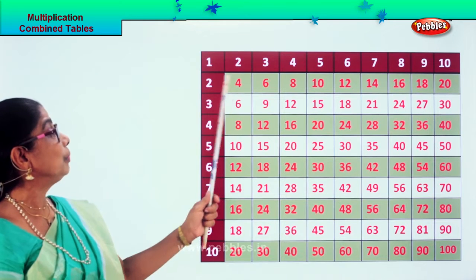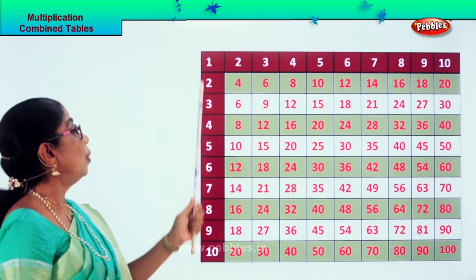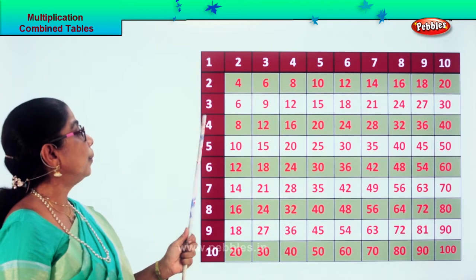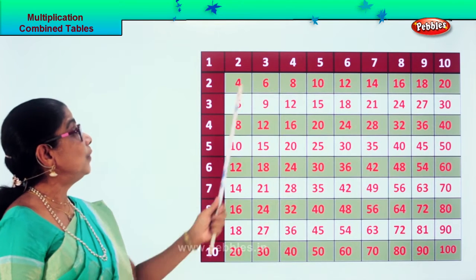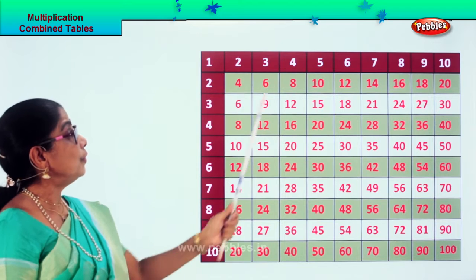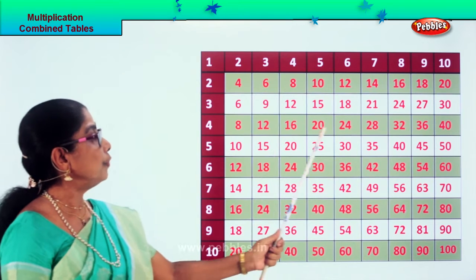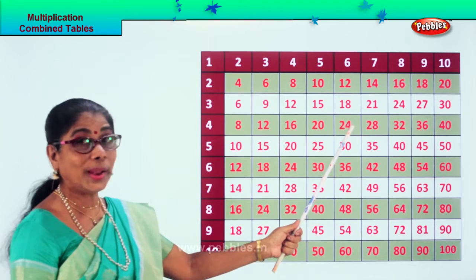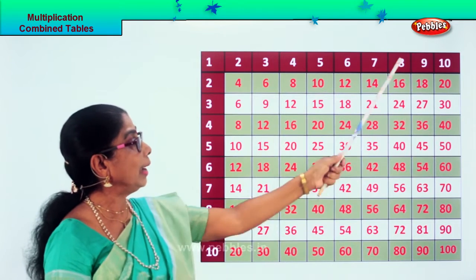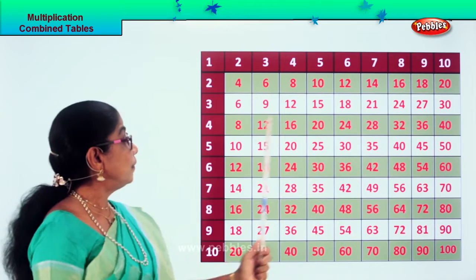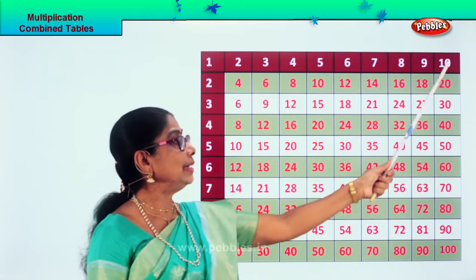Now let's go to the four times table. Look at the number four. Four ones are four, four twos are eight, four threes are twelve, four fours are sixteen, four fives are twenty, four sixes are twenty-four, four sevens are twenty-eight, four eights are thirty-two, four nines are thirty-six, four tens are forty.